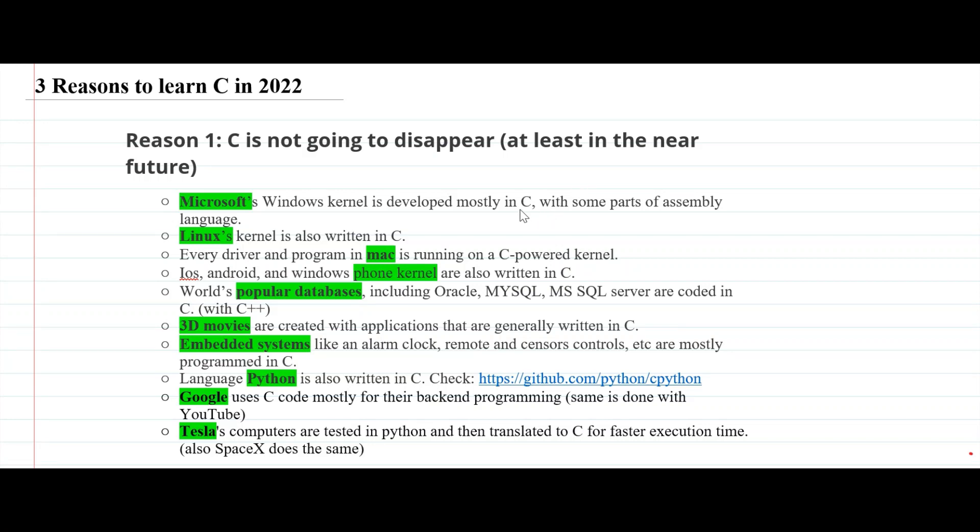If we talk about operating systems like Windows, Linux or Mac, the kernel part of these operating systems are written in C. The same is true for iOS, Android and Windows phones. Popular databases including Oracle and MySQL are coded in C.